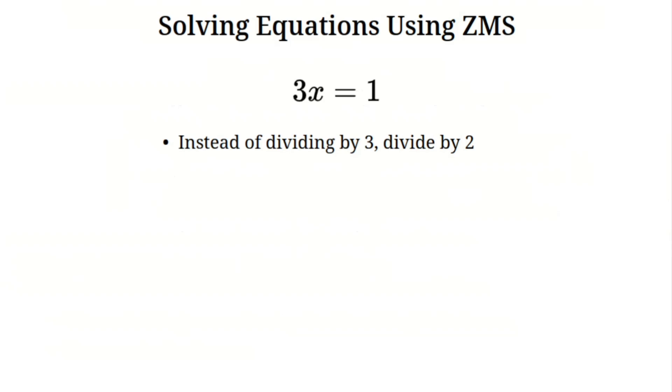Section two, solving equations using ZMS. Example one, solving a simple equation. Let's solve the equation three times x equals one. In normal math, you would divide both sides by three. But in ZMS, dividing by three gives zero, which is useless. Instead, we look for a number that makes three behave like one when we divide. That number is two because three divided by two is one. So let's divide both sides of the equation by two. Now we have three divided by two times x equals one divided by two. Since three divided by two is one in ZMS, this simplifies to x equals one divided by two. And that's our answer.